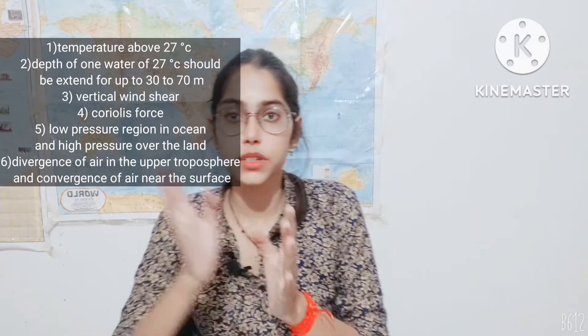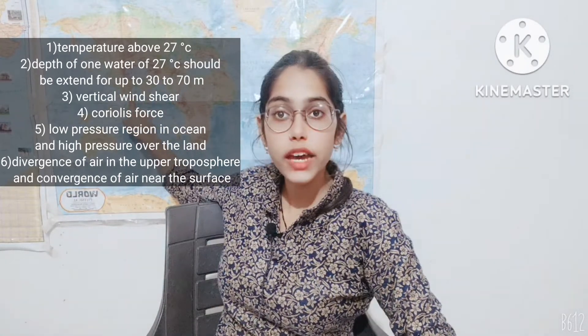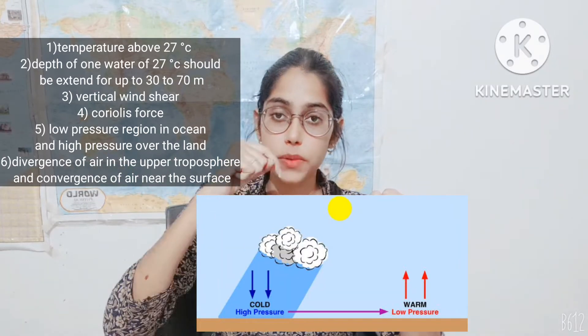What happens is that air moves from high pressure to low pressure. Because this is the September or October period, winter starts and the land begins to cool. So the land creates a high pressure zone and the ocean creates a low pressure zone. The air then moves from the high pressure zone to the low pressure zone.